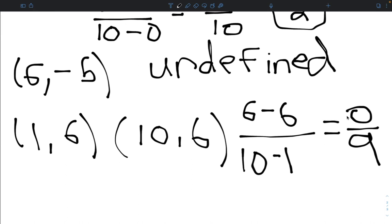Alright, and because we have 0 over 9, that means our slope is just going to be 0. So, we're going to have a slope of 0.